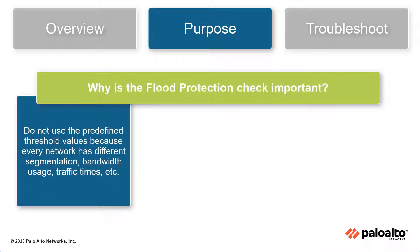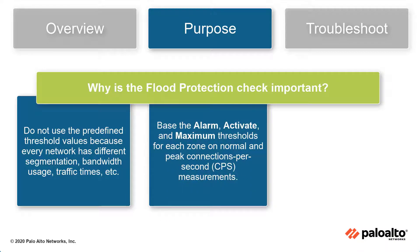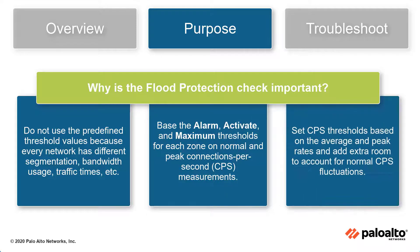Enable and set appropriate flood protection thresholds for each zone. Do not use the predefined threshold values because every network has different segmentation, bandwidth usage, traffic types, etc. Instead, base the alarm, activate, and maximum thresholds for each zone on normal peak connections per second (CPS) measurements for the zone and its interfaces. Take the measurement over the course of at least one normal business week, set CPS thresholds based on the average and peak rates, and add some extra room to the thresholds to account for normal CPS fluctuations or margins of error.